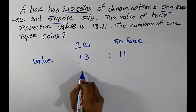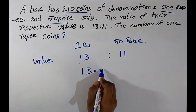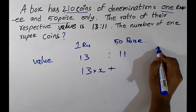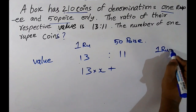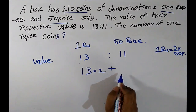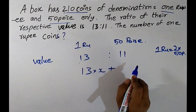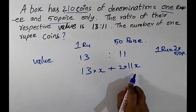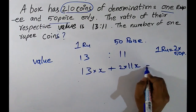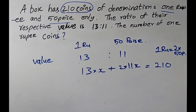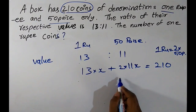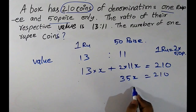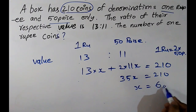We multiply by x since we don't know the exact number. For 1 rupee coins: 13x coins. For 50 paise coins: for every 1 rupee we need two 50 paise coins, so for 11 rupees we need 2 × 11x = 22x coins. Total coins: 13x + 22x = 35x = 210. Solving: x = 6.